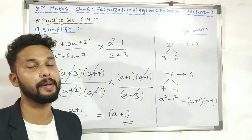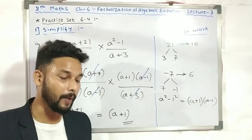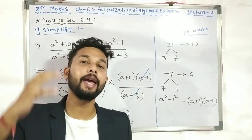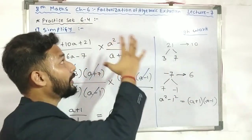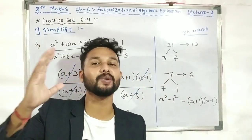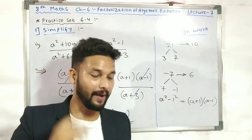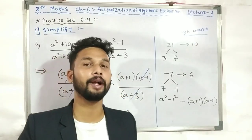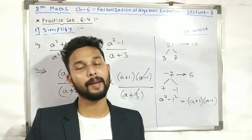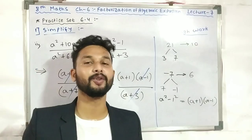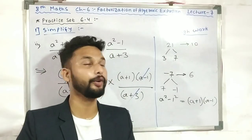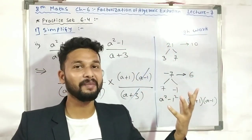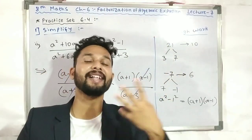I hope that you will not have doubts and you will be able to solve the remaining examples as homework. You will be able to solve it easily. So I am stopping today. I am happy to declare that the chapter on Factorization of Algebraic Expressions is finally completed. Our last Practice Set 6.4 has been completed here. The next lecture video we will start a new chapter, because this chapter is finished.